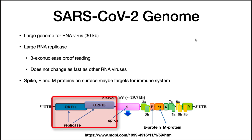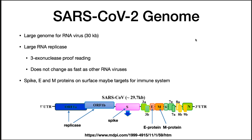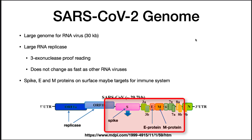The first two genes, ORF1A and ORF1B, encode the polyproteins which make parts of the replicase. The large RNA replicase is unusual in that it encodes a 3-prime exonuclease, which is a proofreading activity, so when it copies its genome it is actually able to go back and fix mistakes. This means that this RNA virus does not mutate as rapidly as other RNA viruses. The spike, E, and M proteins may serve as targets for the immune response.